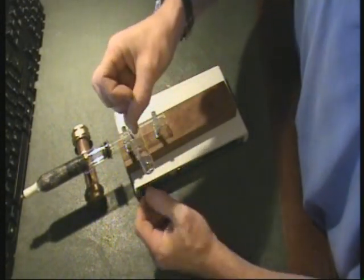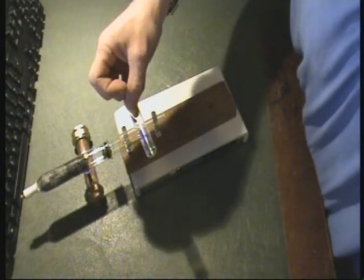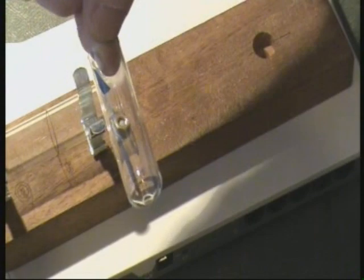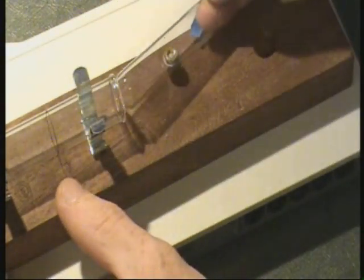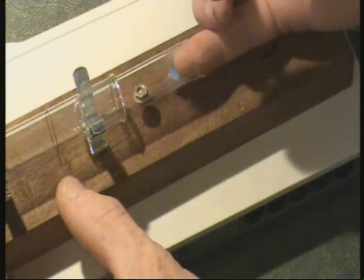This is the piston, and in the bottom is a small nut, and the reason for the nut is to keep the piston in the same orientation while it's travelling up and down inside the bore.